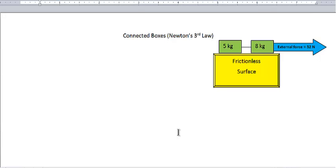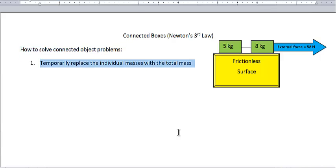If you're still struggling with these you will want to write this down but here's the step to solve all of the connected object problems. First thing you do is temporarily, just for a moment, replace the individual masses with total mass. Let me give you the steps and then I'll go back and show you how they apply.